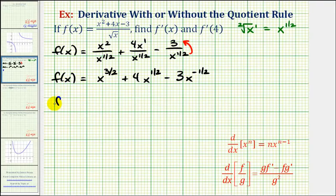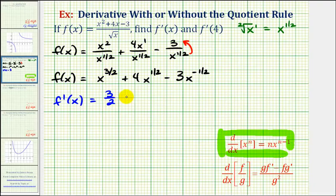So now we can find f prime of x by applying the basic power rule. And if we need a review, it's given here in red. So the derivative of x to the three-halves, we would have three-halves times x to the power of three-halves minus one, which is three-halves minus two-halves, or one-half,